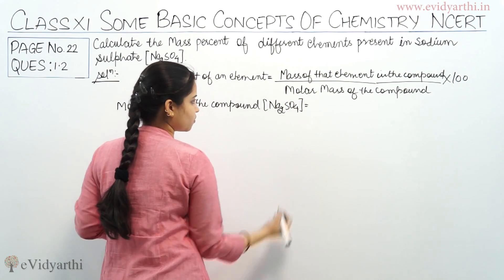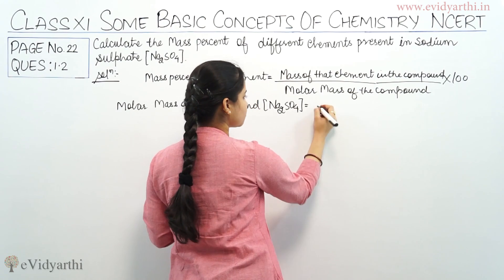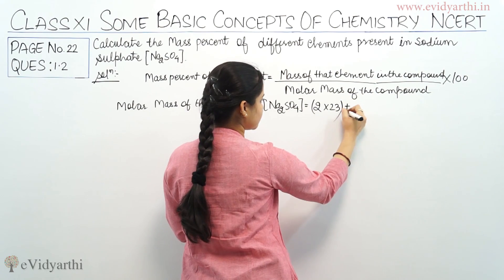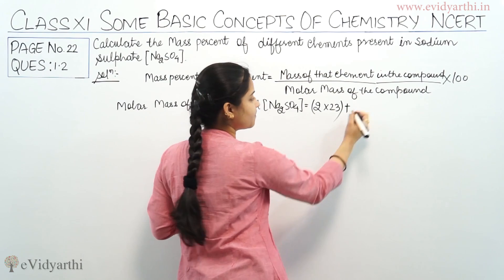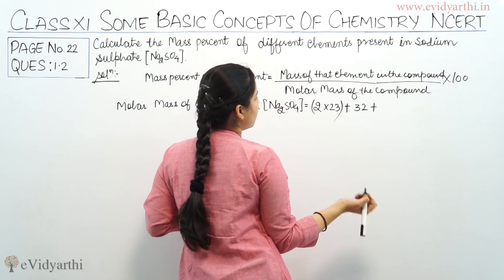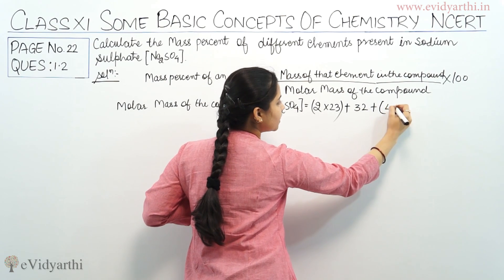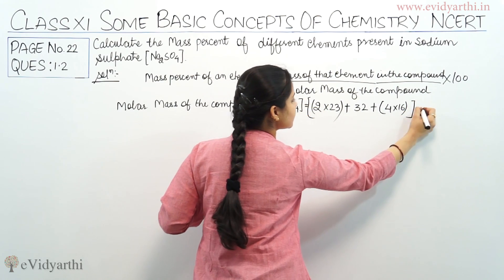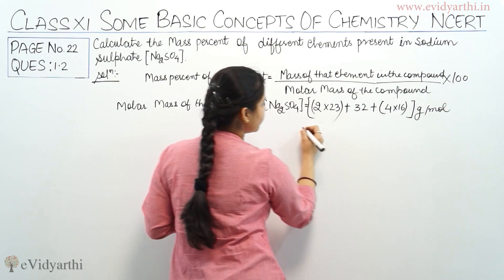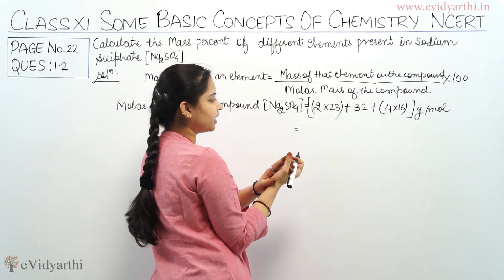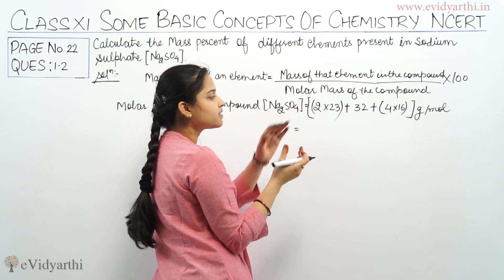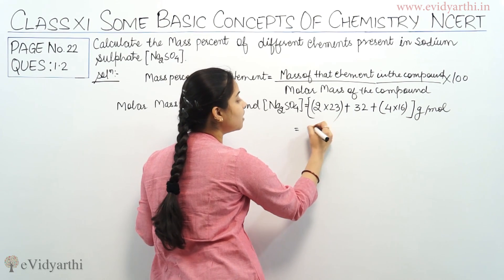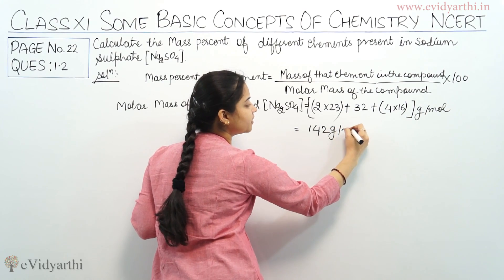Let's begin with the calculation. The molar mass of Na₂SO₄: sodium is 2×23, sulfur is 32, and oxygen is 4×16, all in grams per mole. Adding and multiplying these values, the resultant numerical value is 142 grams per mole.